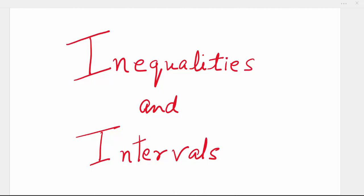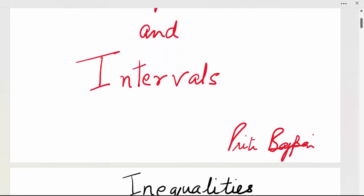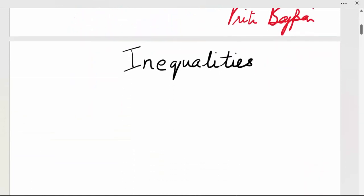Hi everyone, welcome back. In the first video, we studied about numbers and the real line. You saw what are different types of numbers: the natural numbers, which we also call the counting numbers, the whole numbers, integers, rational and irrational numbers, and the real numbers. You also saw where they all lie on the real line. Now today we are going to learn about inequalities and intervals. So let's begin.